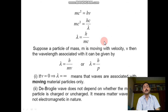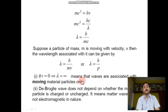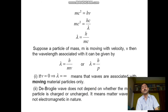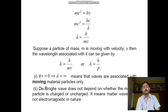If v tends to 0, λ tends to infinity — meaning waves are associated with moving particles only. De Broglie waves do not depend on whether the moving particle is charged or uncharged. That means matter waves are not electromagnetic in nature. This point is to be remembered.